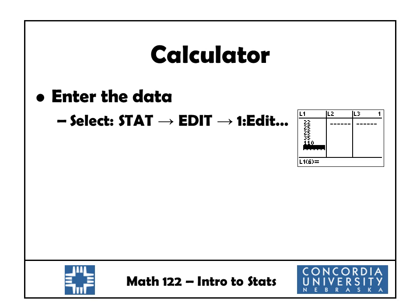Once we've set up the editor, we can start entering data. Select the STAT button again, choose Edit, then scroll to the first option, Edit, and press Enter — you should get a screen with list L1. Enter the data under L1: 22, 25, 25, 35, and 110, pressing Enter after each one.